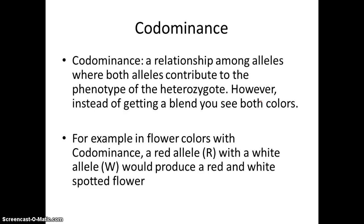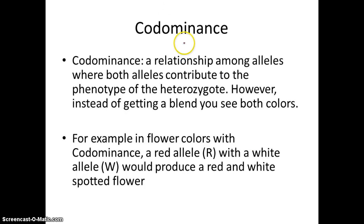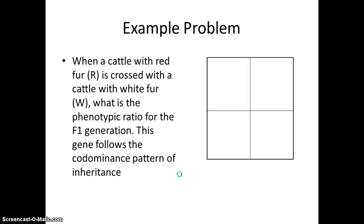Codominance is similar to incomplete dominance. There's no dominant allele, once again, except instead of seeing a blend, you get both colors. So in the mouse, instead of getting a gray mouse, you would get a mouse that's black and white, or black with white spots, or something like that. So codominance is sort of same thing, there's no dominant allele, but instead of getting a blend, you see both phenotypes. So, again, with the flower example, if we have a red allele for flower color, and a white allele, instead of getting pink in codominance, you would get a flower with red and white spots on it.